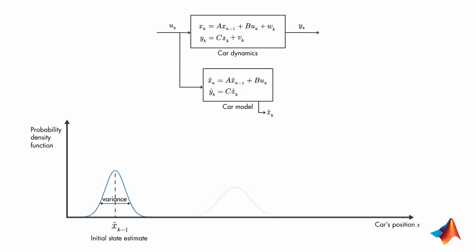At the next time step, the uncertainty in the estimate has increased, which is shown with the larger variance. This is because between time step k-1 and k, the car might have run over a pothole or maybe the wheels may have slipped a little bit.